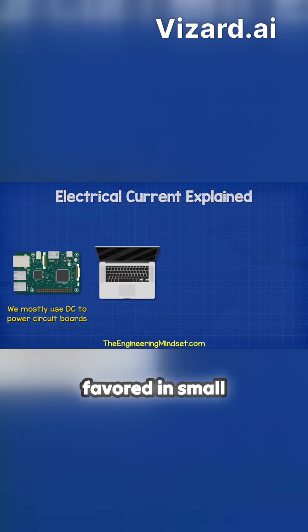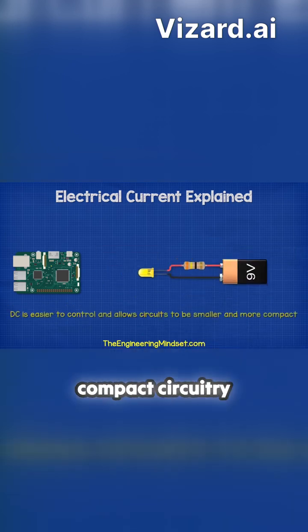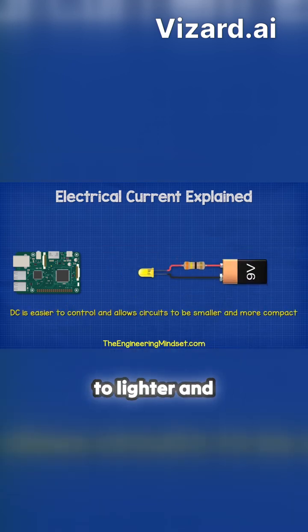Conversely, DC is favored in small electronic devices, such as laptops and smartphones, enabling more compact circuitry that contributes to lighter and more manageable devices.